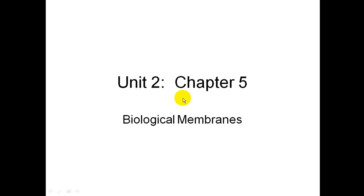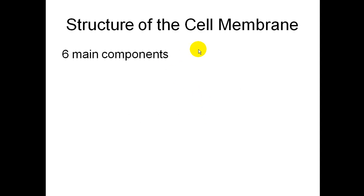This is the podcast for AP Biology, Chapter 5, Part 1, which is on the biological membrane and passive transport. The first thing we're going to talk about is the cell membrane.